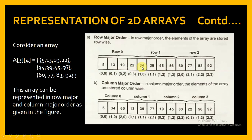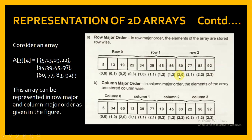After storing row 0, we store row 1 with elements 33, 34, 39, 45, and 56, at indices (1,0), (1,1), (1,2), and (1,3). Next, row 2 is stored with elements 60, 77, 83, and 92, at indices (2,0), (2,1), (2,2), and (2,3). So all the elements belong to row 2 with different column numbers. This is how the entire array is stored in memory in row major order.